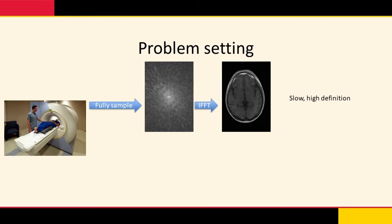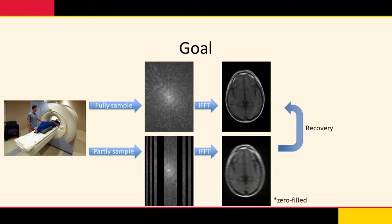Recovering MR sequences from undersampled data has been of significant research interest as it can accelerate MR acquisitions. Traditionally, MR machines acquire signals in the K-space and perform inverse Fourier transforms to convert the signal to the image space. Such acquisition is a time-consuming process which limits the availability of MR machines and may be prone to motion artifacts. Ideally, we like to sample only part of the K-space and recover the degraded information through algorithms to speed up acquisition. For the purpose of this work, we consider recovery as a post-processing step after all K-space acquisition is done.